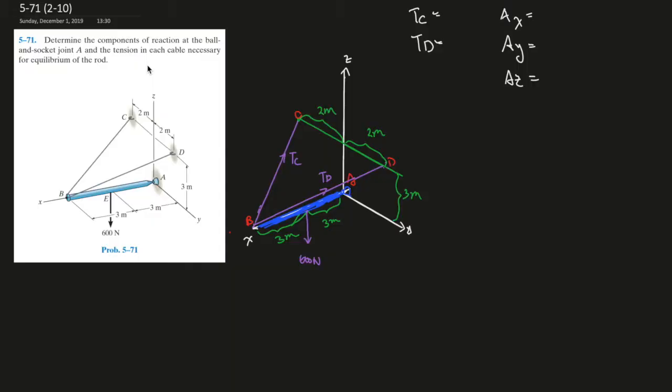I can assist you or tutor you more if you have questions, just email me. Components of reaction to the ball and socket joints A and the tension to each cable necessary for equilibrium of the rod.